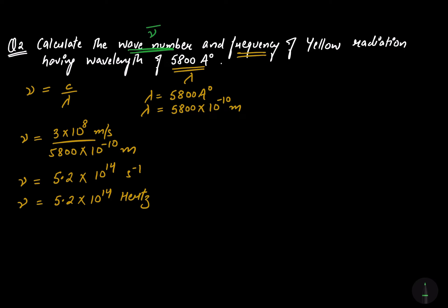The wave number is the number of waves formed in one centimeter length, so we put the wavelength in centimeters. The wavelength is 5800 angstroms, and using the conversion factor of 10⁻⁸, it becomes 5800 × 10⁻⁸ centimeters.